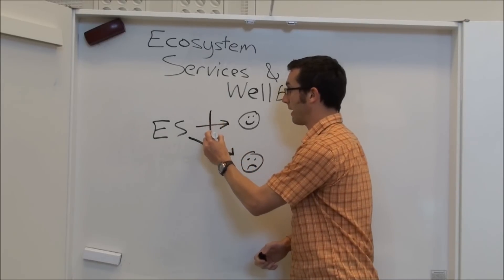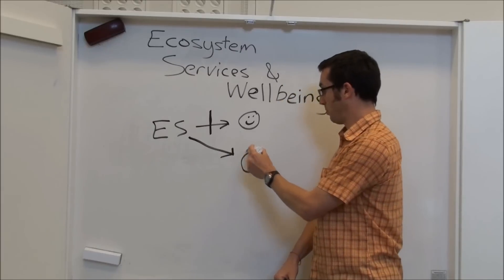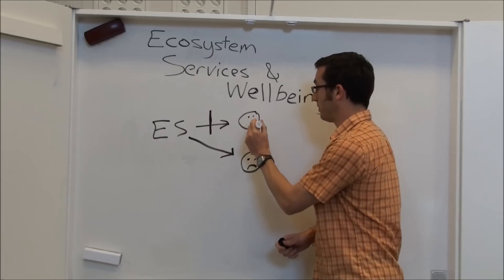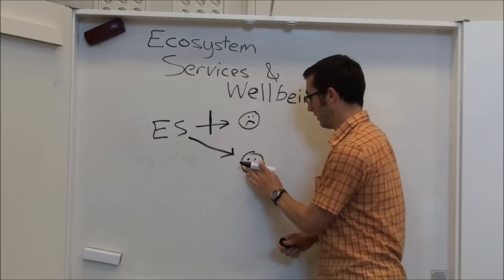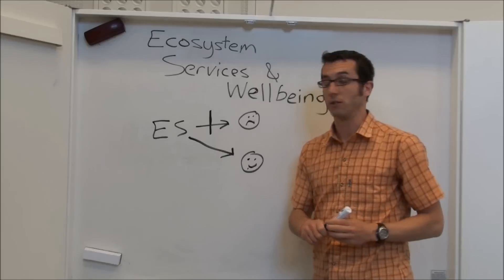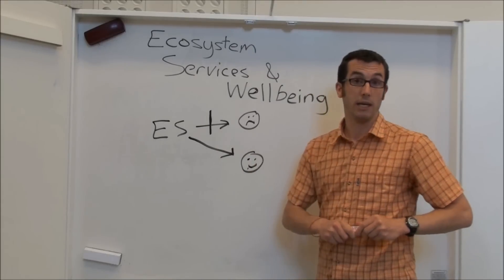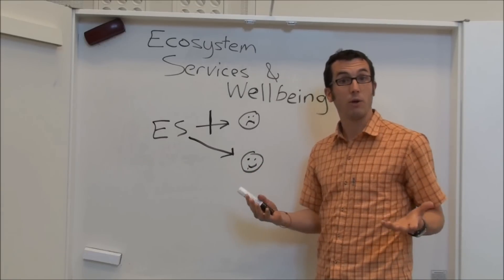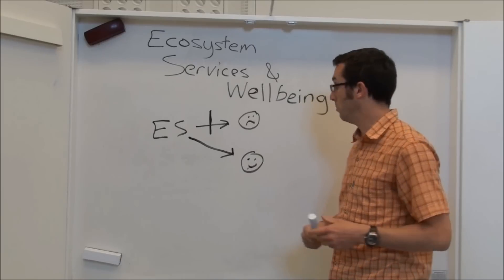So if there is some kind of access mechanism, for example this person has a fishing permit, this person does not have a fishing permit, this person is going to lose out on the benefits of this ecosystem service, and it doesn't matter how much fish is produced by this ecosystem, this person's wellbeing is not going to be improved. So access is a key aspect of how ecosystem services contribute to human wellbeing.